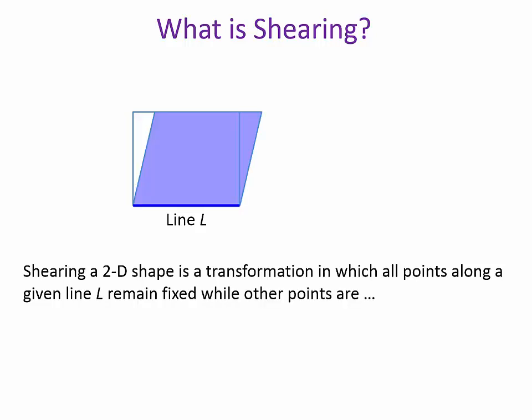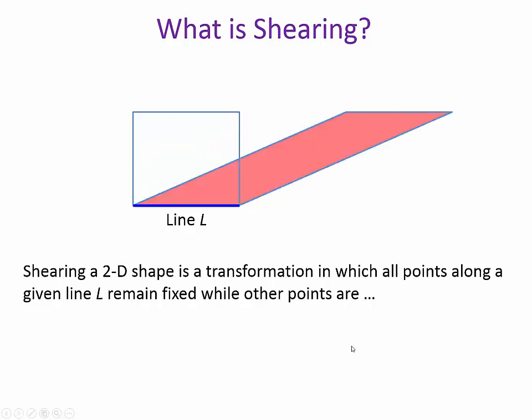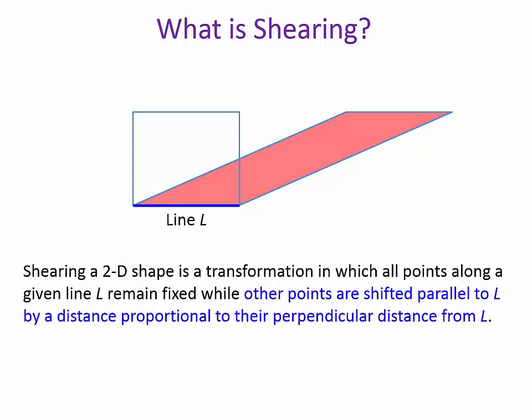What are the other points? How are they shifted? So you see how the rectangle becomes a parallelogram? The other points are shifted parallel to L by a distance proportional to the perpendicular distance from L.